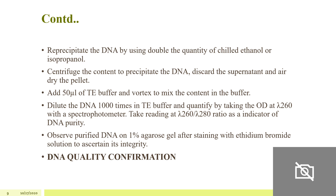Observe the purified DNA on a 1% agarose gel after staining with ethidium bromide to ascertain its integrity. For DNA quality confirmation: prepare a 1% agarose solution by melting 1 g of agarose in 100 ml of 0.5× TBE buffer in a microwave for approximately 2 minutes. Add 2.5 µl of ethidium bromide, cast the gel, and allow it to set for 20 minutes at room temperature. Load a 10 µl 1 kb ladder and samples (5 µl sample + 5 µl water + 2 µl 6× loading buffer). Run the gel for 30 minutes at 100 V, then expose to UV light. A highly resolved high-molecular-weight band indicates good quality DNA; a smeared band indicates DNA degradation.